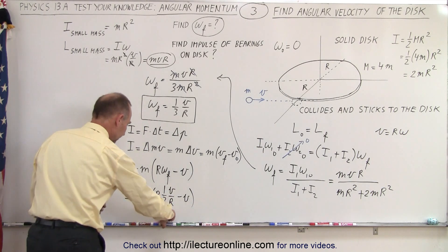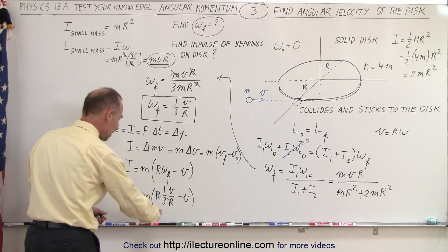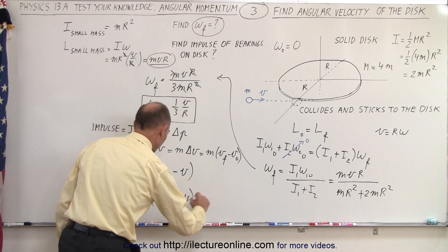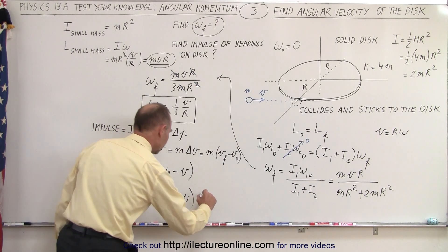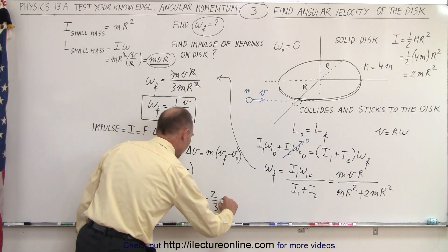And notice in this case the r's cancel out. We have one-third v minus v. So that means this equals one-third minus, that would be minus two-thirds, m times v.